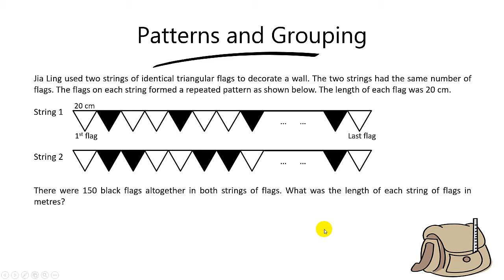In this video, we are going to cover a pretty challenging question involving patterns as well as grouping. Jia Ling used two strings of identical triangle flags to decorate a wall. The two strings had the same number of flags. The flags on each string form a repeated pattern as shown below. The length of each flag was 20 cm.